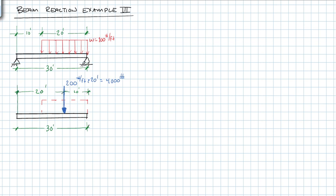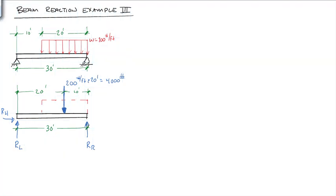And we're also going to have reactions. We're going to have a vertical reaction on the left, RL, a vertical reaction on the right, RR, and a horizontal reaction, RH. And you can see now this just boils down to a very similar problem as we worked on earlier.